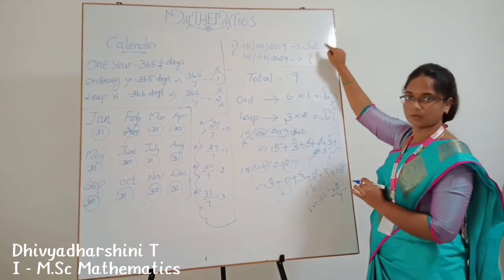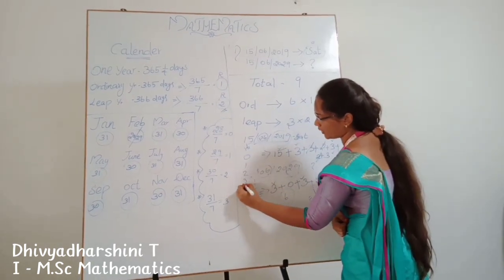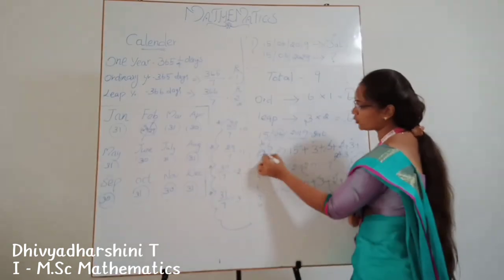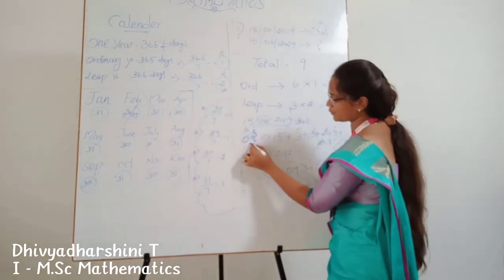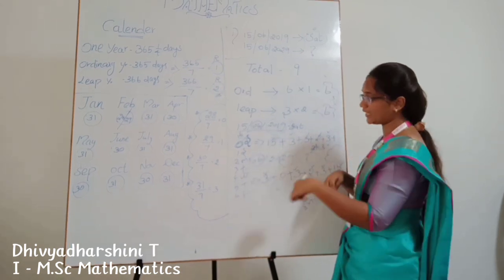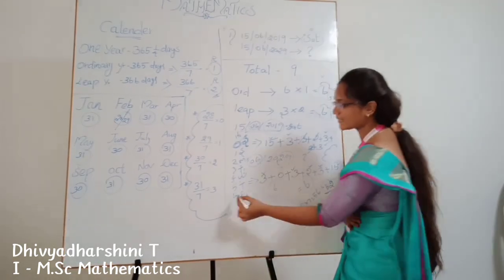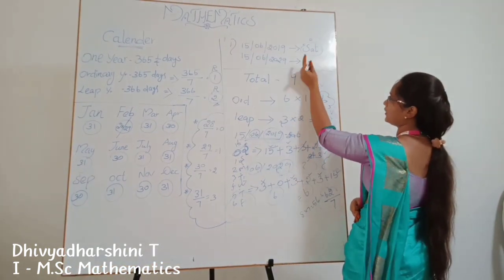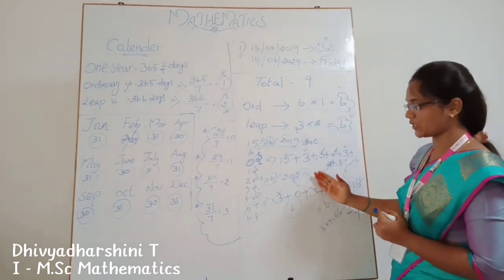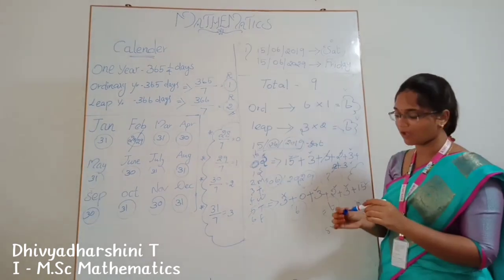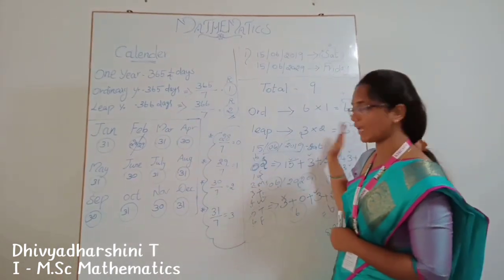How do we set the day? We put 0 = Saturday, then 1 = Sunday, 2 = Monday, 3 = Tuesday, 4 = Wednesday, 5 = Thursday, 6 = Friday. Our remainder is 6, so the answer is Friday. Therefore, 15th June 2029 falls on a Friday. In this method: first find total ordinary and leap years, then add month codes, then add the date, divide by 7, and map the remainder to the day. Thank you.